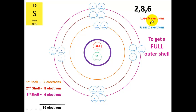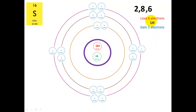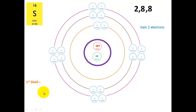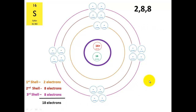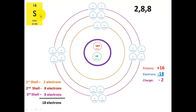To get a full outer shell, sulfur can either lose 6 electrons or gain 2 electrons. It's going to take the easy option, which is to gain 2 electrons. So the outer shell becomes 8, with 2 electrons jumping in — 1, 2. We'll have 2 in the first shell, 8 in the second shell, 8 in the third shell, giving a total of 18 electrons. We've got 16 protons (that doesn't change) and now 18 electrons, so the overall charge is plus 16 minus 18 equals minus 2. The sulfur atom becomes a sulfur ion with a charge of 2 negative.